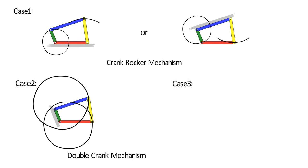Case 3: Link opposite to the shortest link is fixed. This configuration is a double rocker mechanism.